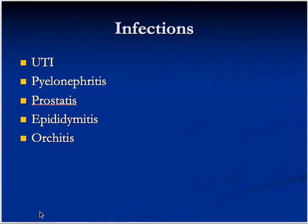For example, someone who has an obstructed kidney or ureter — sometimes due to infections there is development of abscess, or if there is any foreign body, sometimes due to infection there could be fistula formation. Then of course we go for surgery.